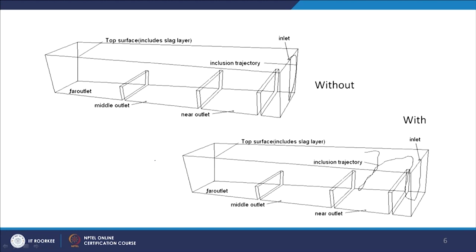The top surface is the slag layer. Once flow modifiers are used, the inclusion trajectories can be plotted with and without them — that is one example. You will create your own geometry and use these algorithms to get the trajectory of the inclusion.